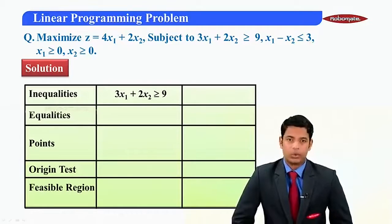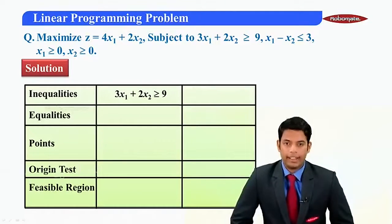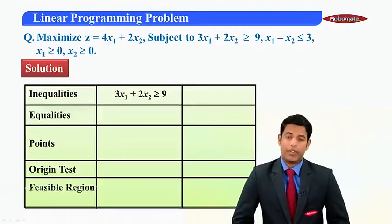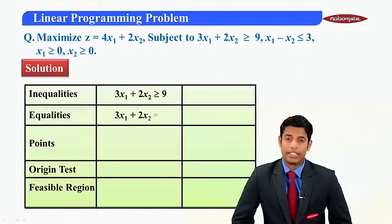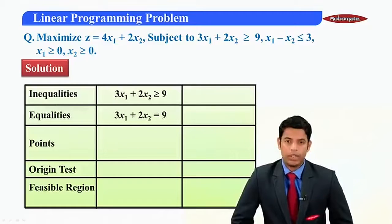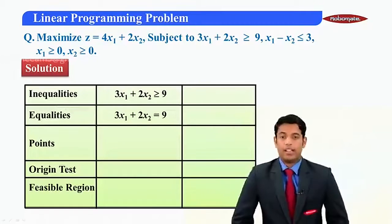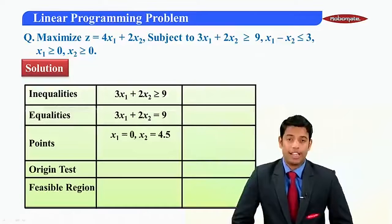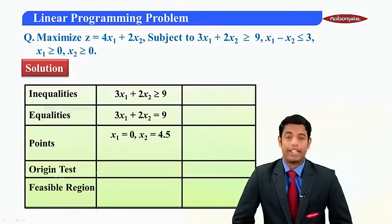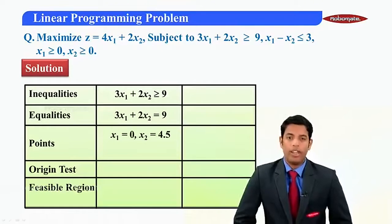So in this, first inequality is 3x1 plus 2x2 greater than or equal to 9. We'll convert this inequality into equation, that is 3x1 plus 2x2 equal to 9. Now what are the points on this line? Put x1 as 0 will get x2 as 4.5...